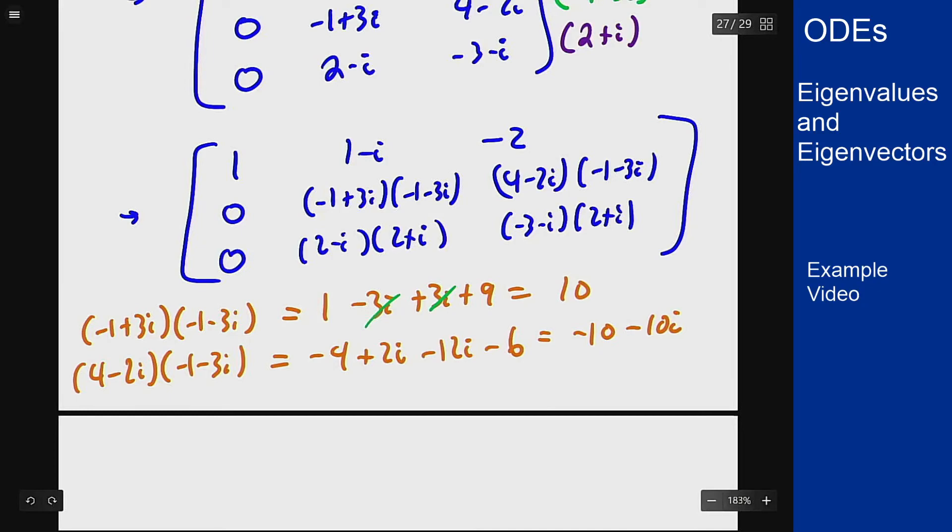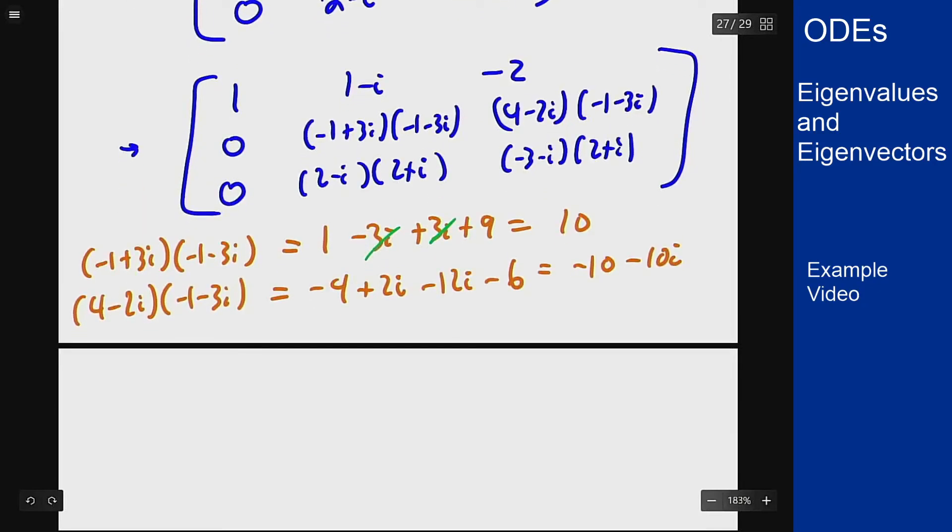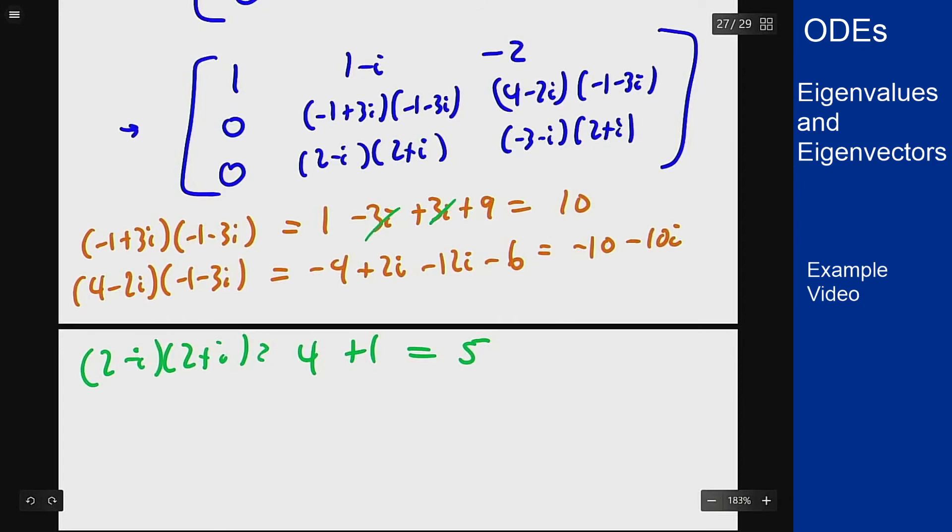In the bottom row, 2 minus i times 2 plus i is difference of squares again, so it's going to be 4 plus 1, which is 5. And in the last column I will see -3 minus i times 2 plus i gets me -6 minus 2i minus 3i and then plus 1, i squared is -1 with a minus sign, which is -5 minus 5i.